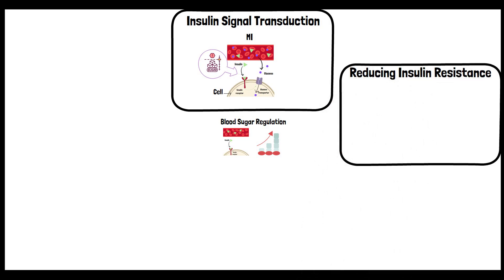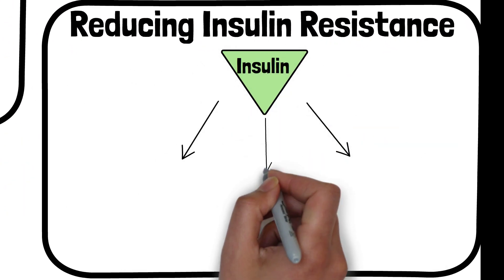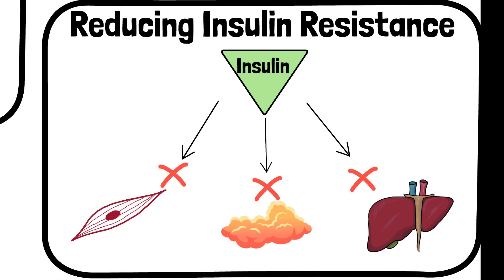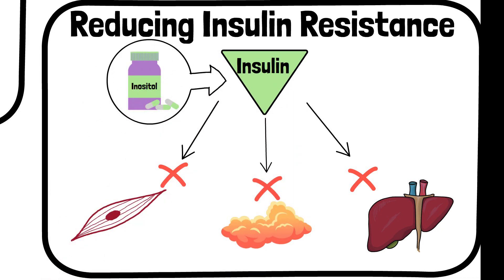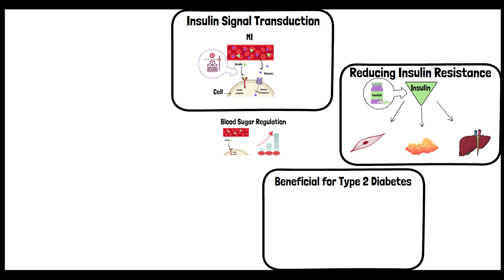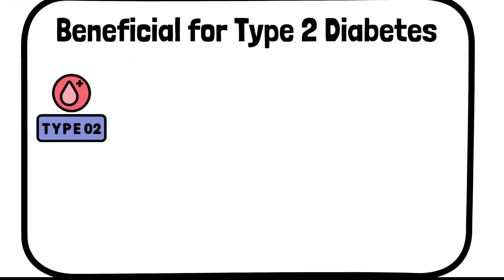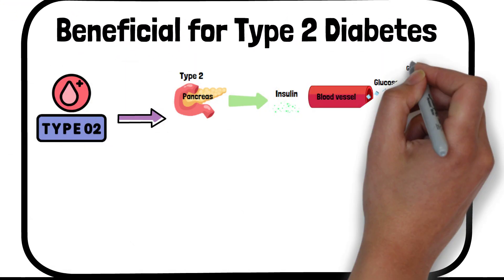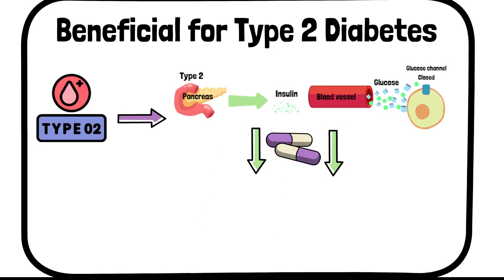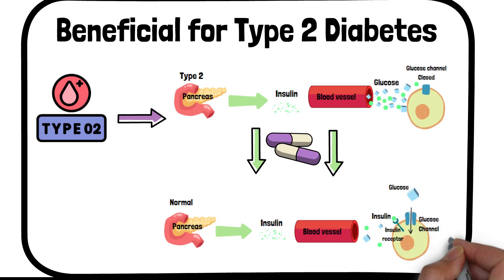Insulin resistance is a condition where cells in muscles, fat, and the liver don't respond well to insulin and can't easily take up glucose from the blood. Inositol supplementation helps to reduce insulin resistance, thereby improving glucose uptake into cells and lowering blood sugar levels. By improving insulin sensitivity, inositol is particularly beneficial in managing type 2 diabetes, complementing other diabetes treatments and lifestyle changes.